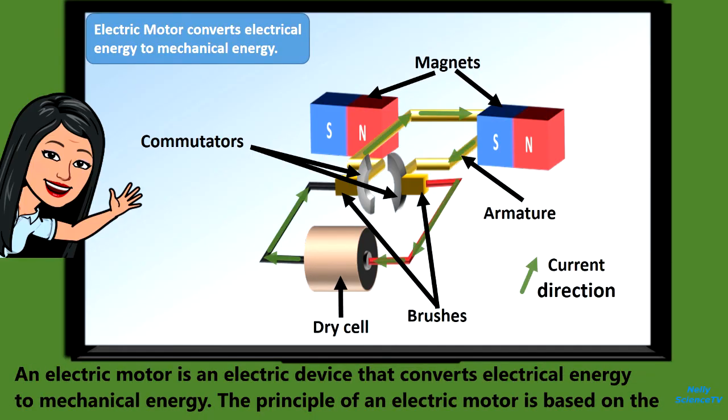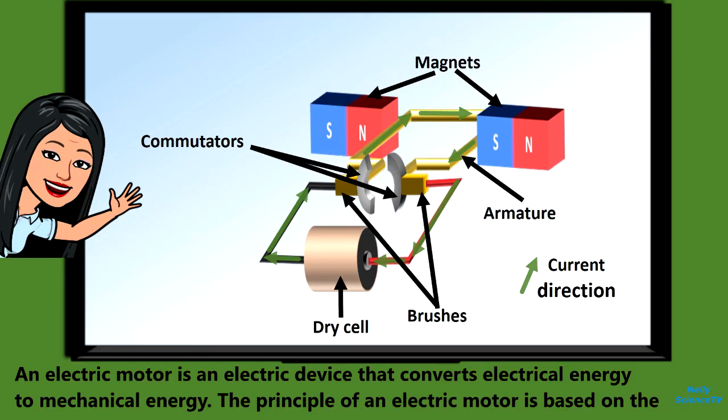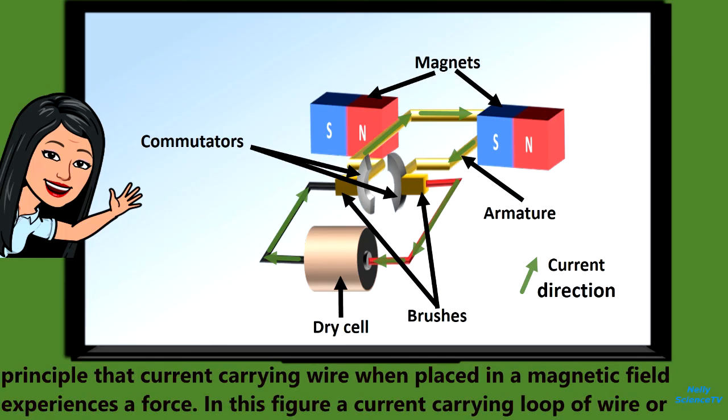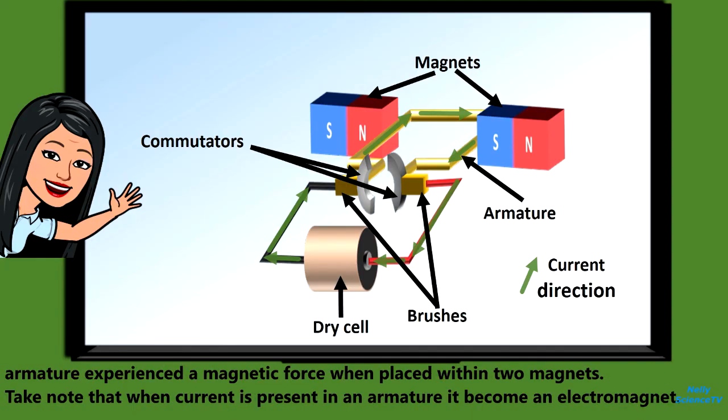An electric motor is an electric device that converts electrical energy to mechanical energy. The principle of an electric motor is based on the principle that a current-carrying wire, when placed in a magnetic field, experiences a force. In this figure, a current-carrying loop of wire, or armature, experiences a magnetic force when placed within two magnets.